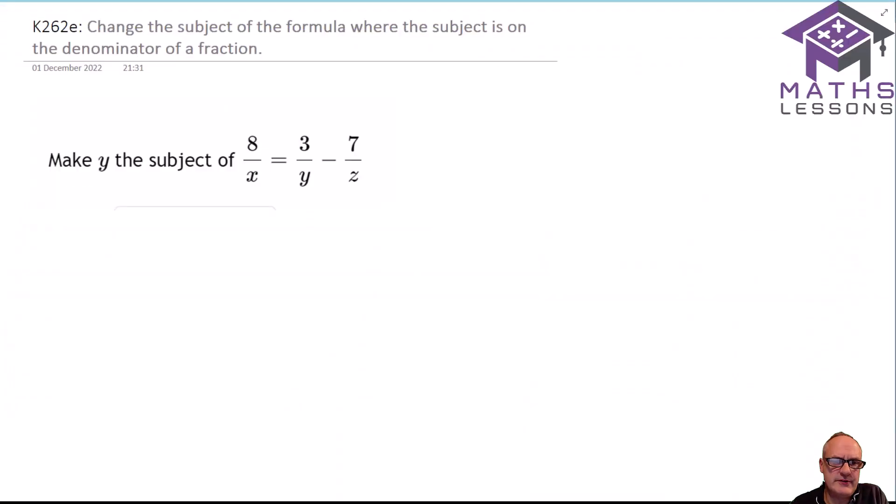Right, next up in our series on how to get a grade 9 in Maths GCSE, here is a tricky rearrangement that one of my students sent to me to have a video on. We've got to make y the subject of 8 over x equals 3 over y minus 7 over z.